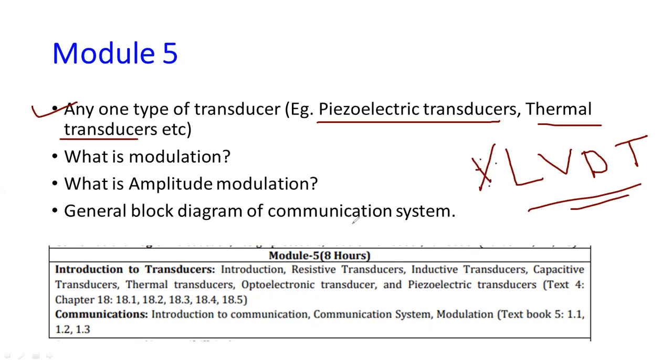Similarly, you may get the question like explain the capacitive transducer. If you know the formula C is equal to epsilon A by D, then you can explain the capacitive transducer. You can measure the displacement, you can measure the force, etc., by using the principle of capacitance.